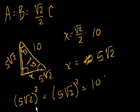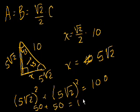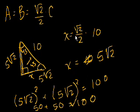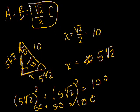5√2 squared is just 25 times 2, which is 50. Plus 25 times 2 is another 50. That gives 100, which equals 100 — so it checks out. We proved it using the Pythagorean theorem, and that's actually how we came up with this formula in the first place. You may want to go back to one of those earlier presentations if you forget how we derived it.